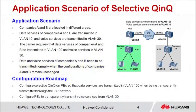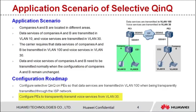Let's see the configuration roadmap. Configure selective QNQ on PEs so that data services are transmitted in VLAN 100 when being transparently transmitted through the ISP network. Configure PEs to transparently transmit voice services from VLAN 30. After the configuration is complete, data and voice services of companies A and B can be correctly forwarded.